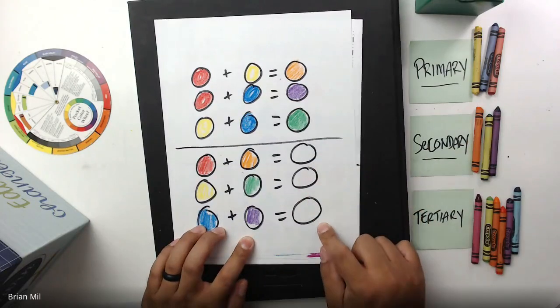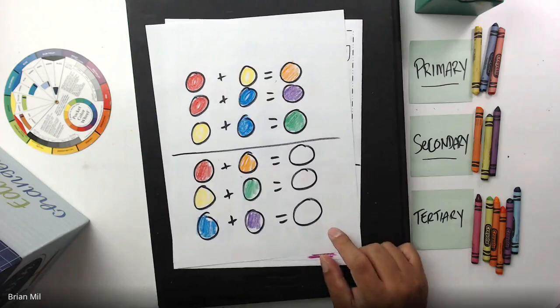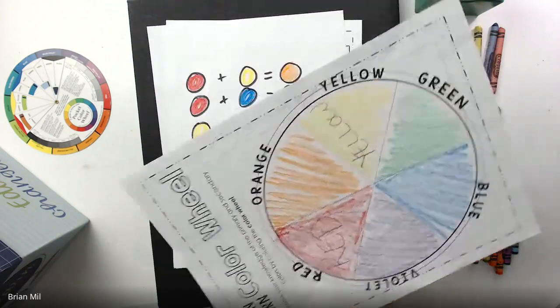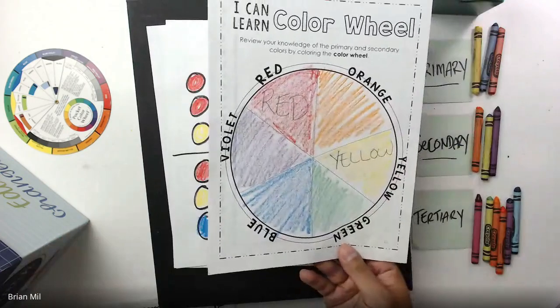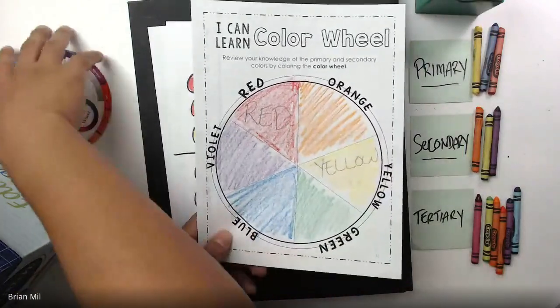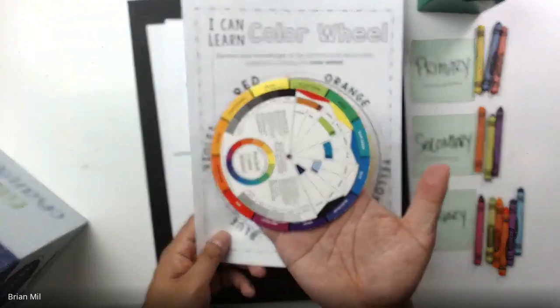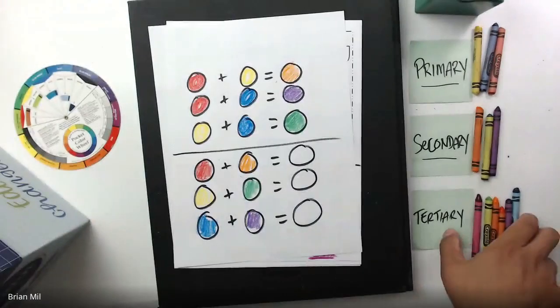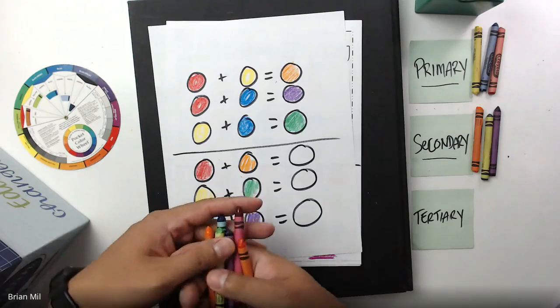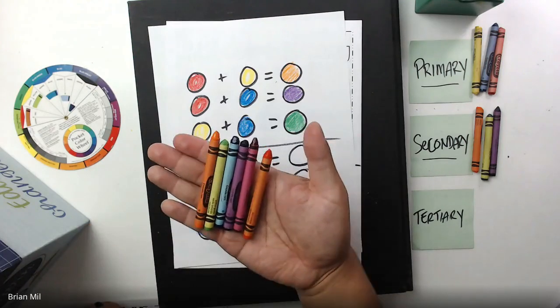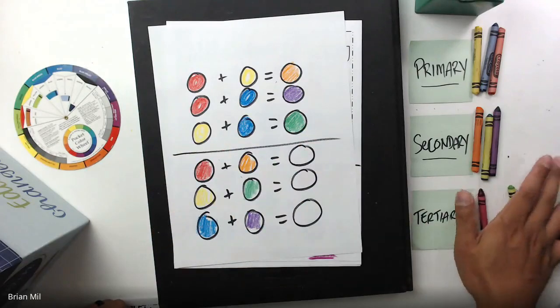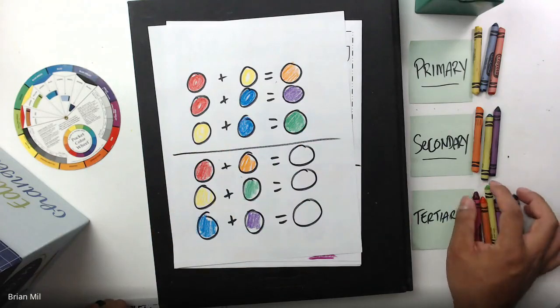Now the equal signs right here, they're not going to equal any primary or secondary colors. This little cheat sheet is not going to help because it's not complete. The real color wheel has 12. The reason why it has 12 is because there's something called tertiary colors. There's about six of them, and they're made by adding primary and secondary colors together.